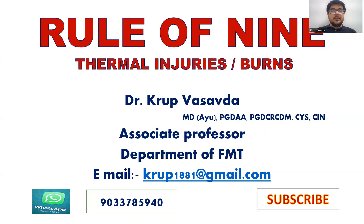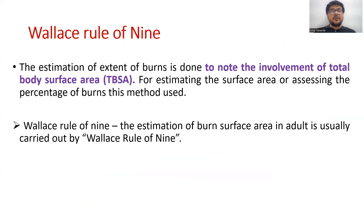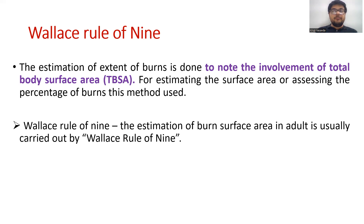Hello friends, I am Dr. Krupa Sauda and today we will be discussing a very important topic: the Wallace Rule of 9. The estimation of extent of burns is done to note the involvement of total body surface area, which is called TBSA. For estimating the surface area or assessing the percentage of burns, this method is used, which is called Wallace Rule of 9. The estimation of burn surface area in adults is usually carried out by Wallace Rule of 9. This is a very important method to understand.